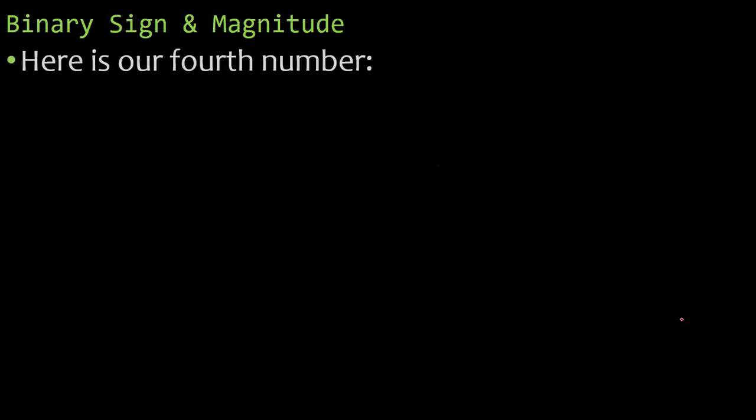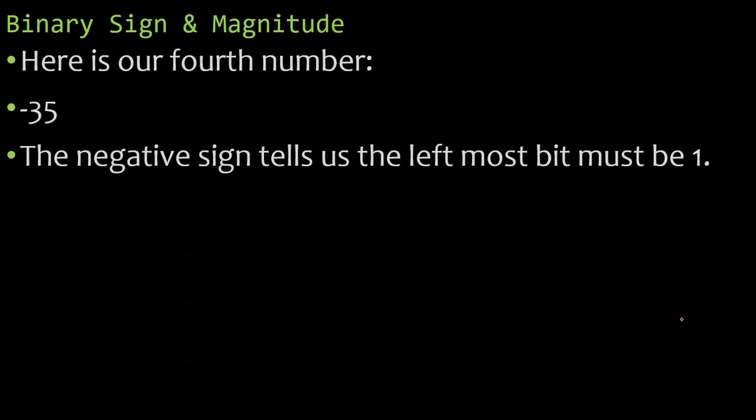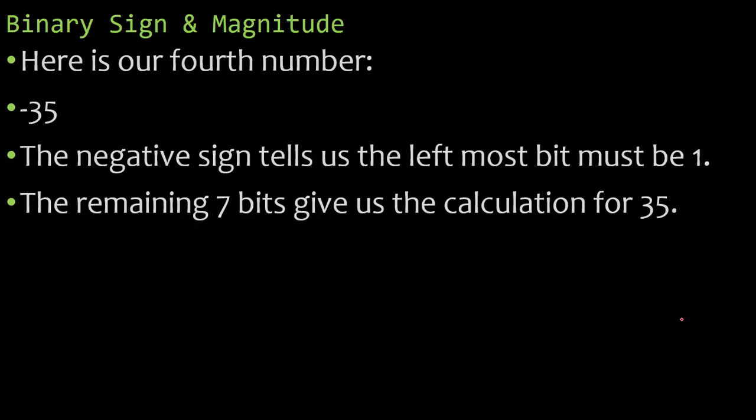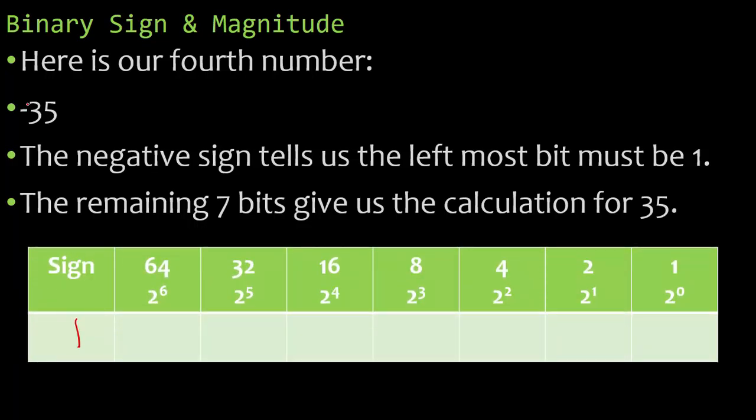Now let's take a look at our last example, our fourth number, negative 35. The negative sign tells us the leftmost bit must be a one. The remaining seven bits will give us the calculation for 35. So I know this is going to be a one that deals with the negative sign. Now I'm looking to do is get the value of 35. Can I use 64 to get to 35? I can't. What about 32? I sure can. When I subtract 32 from 35, that leaves me three. Can I use 16? I cannot. What about eight? Nope. Four? I can't use four, slightly too big. Can I use a two? I sure can. So then I do three minus two, I'm looking for the value of one. And there it is. So for binary sign and magnitude, my binary number would be 10100011. Start with the sign and then work out the binary value for that number.